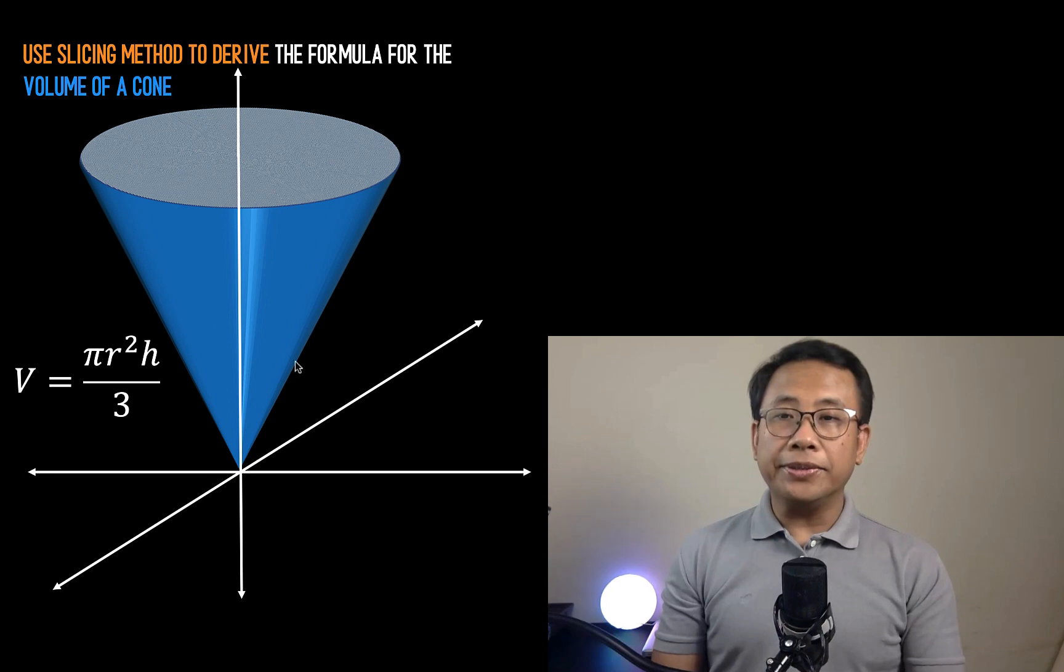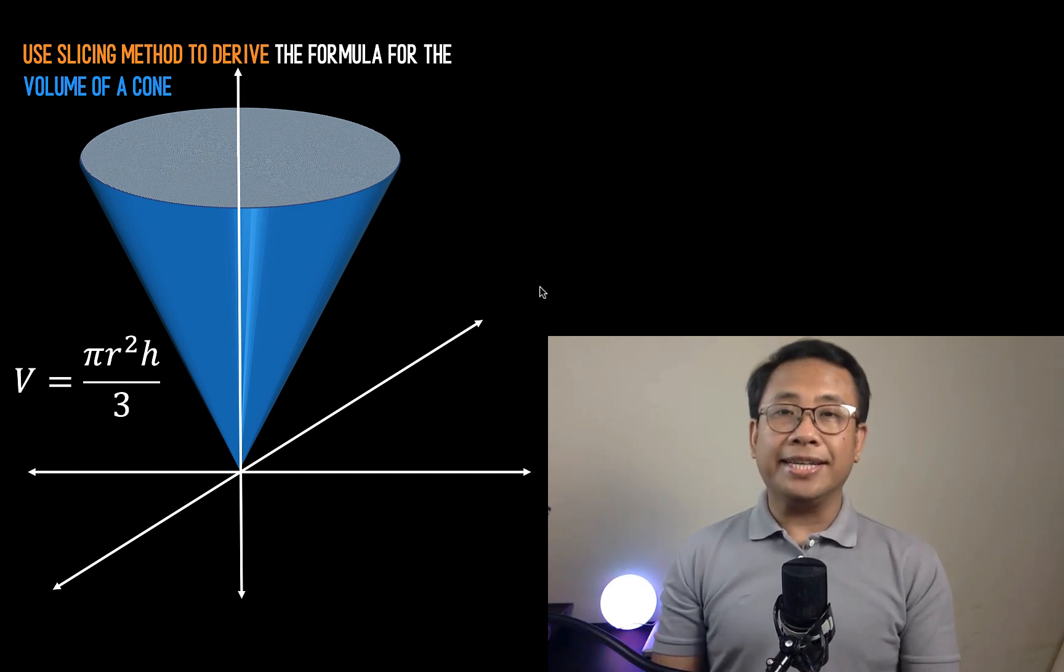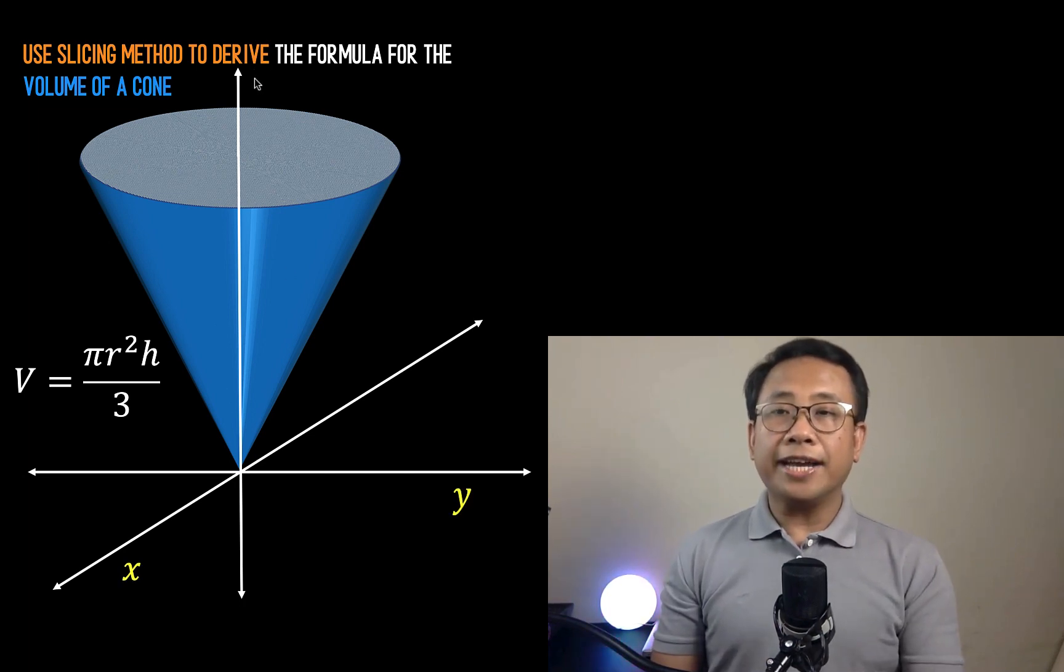Let's begin by situating our cone in an x, y, z space, where the vertex of the cone is at the point of origin. We are going to use a calculus method called the slicing method in order to derive the formula using definite integration. So let's label the axes: this is the x-axis, this is the y-axis, and the vertical axis is our z-axis.